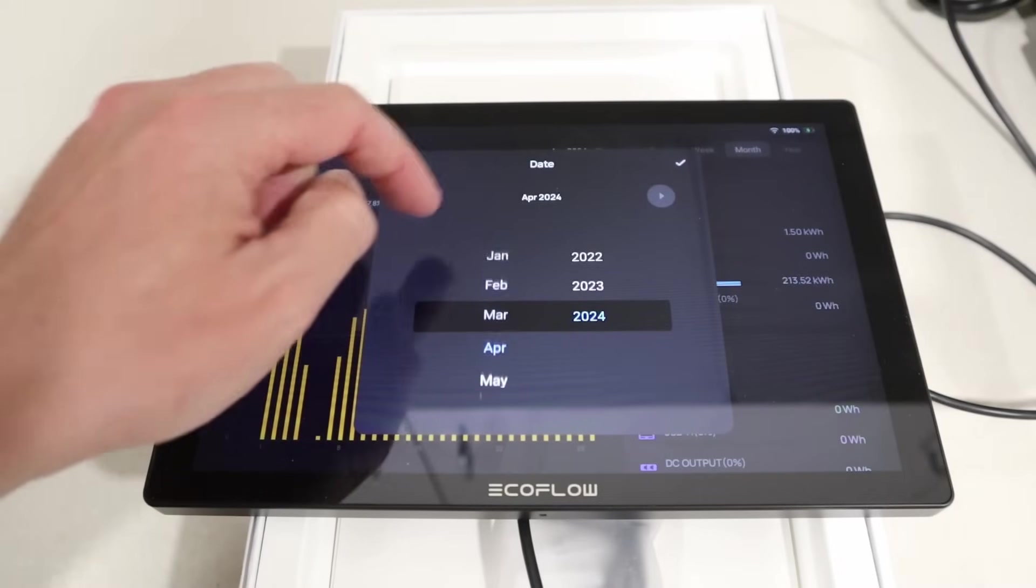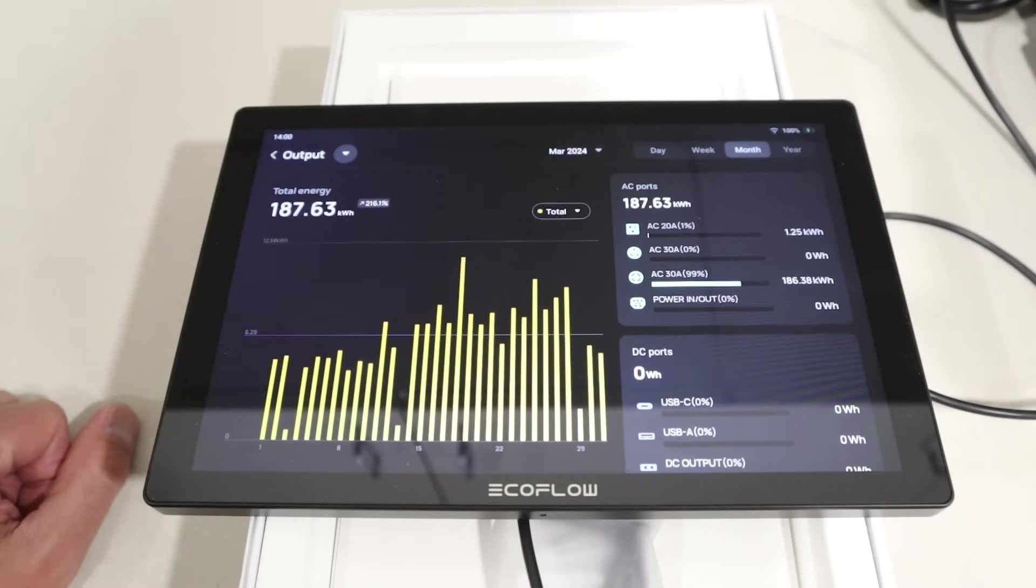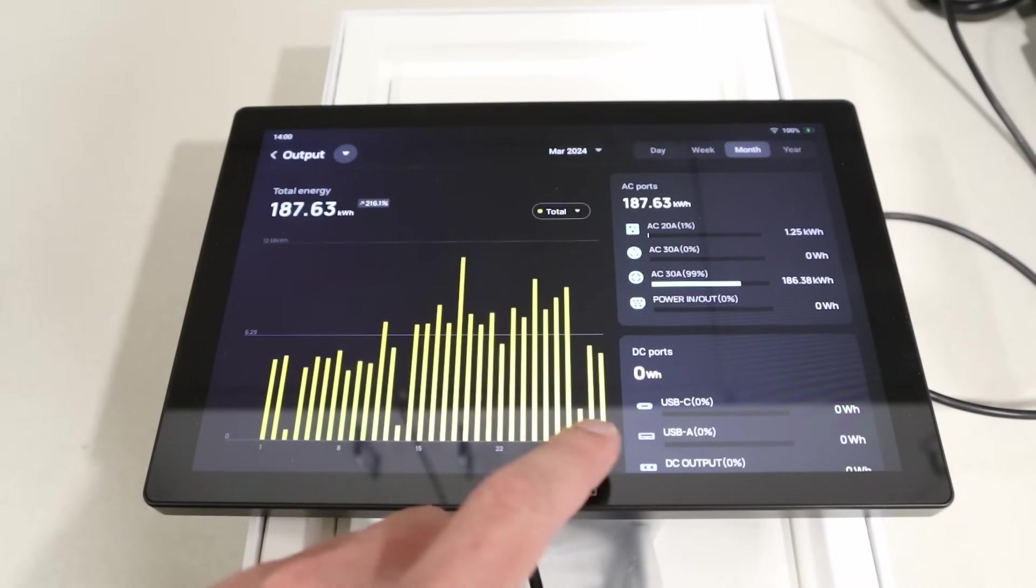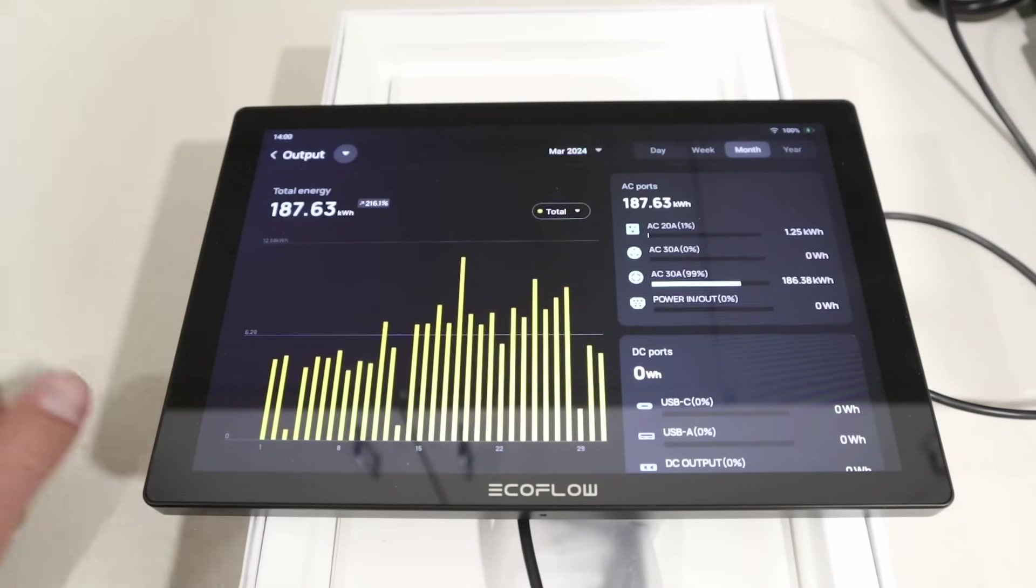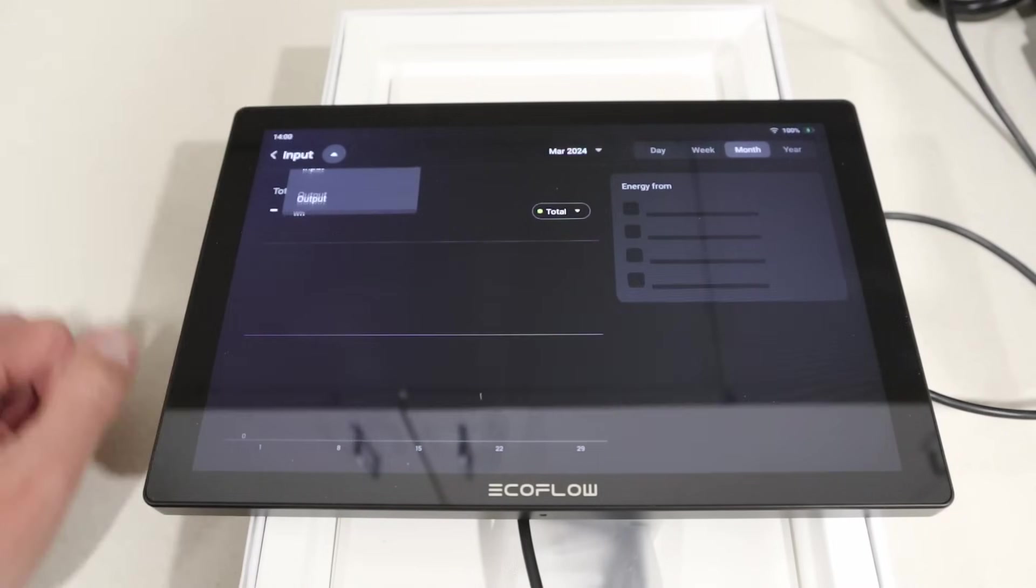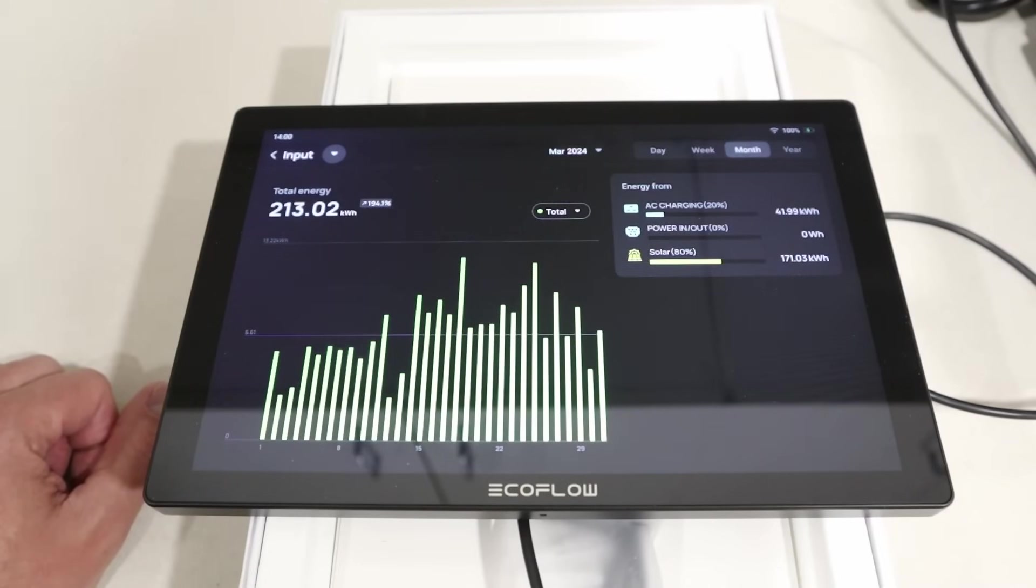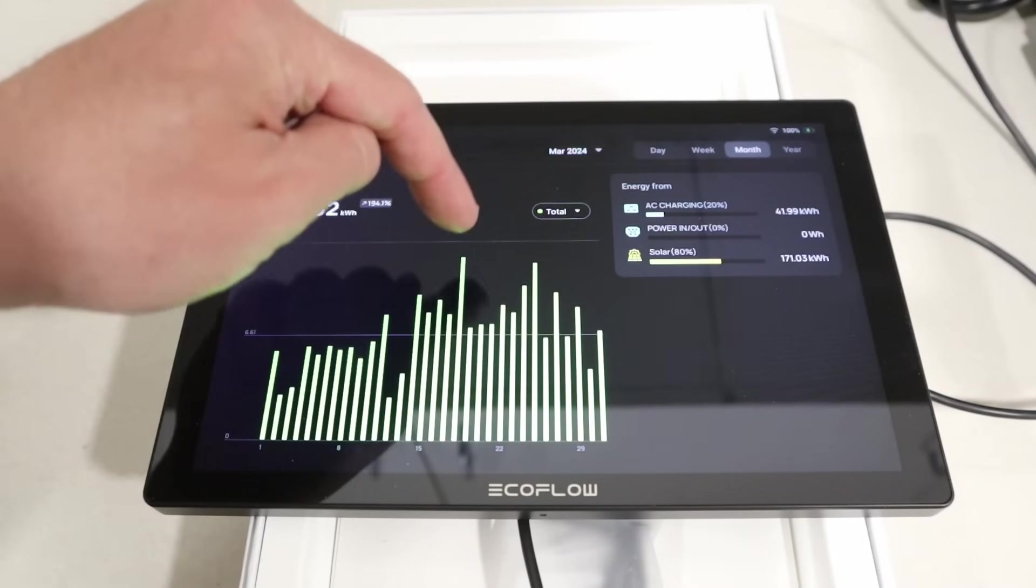Let's go take a look at March. Also, a full month of usage there. We got a couple days of cloudy weather. But for the most part, quite a bit of power output, 187 kilowatt hours. And for the input, we're at 213 kilowatt hours. Must have had some really good sunny days here.